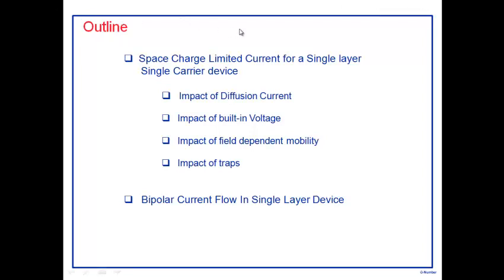The current in this simple organic semiconductor device is described by what we call space charge limited current (SCLC). While developing the SCLC model, we'll discuss various aspects: whether diffusion current is important, the impact of built-in voltage, field-dependent mobility, and the impact of traps. Our discussion focuses on a single-layer, single-carrier device — only holes or only electrons — and later we'll look at bipolar current flow.